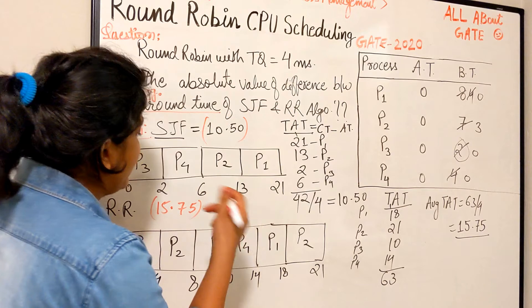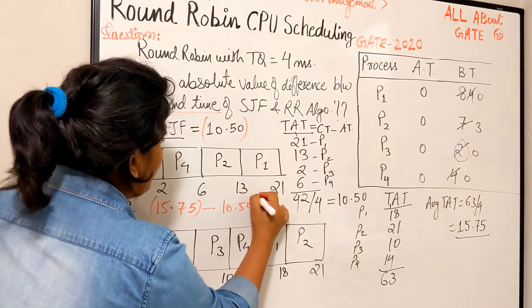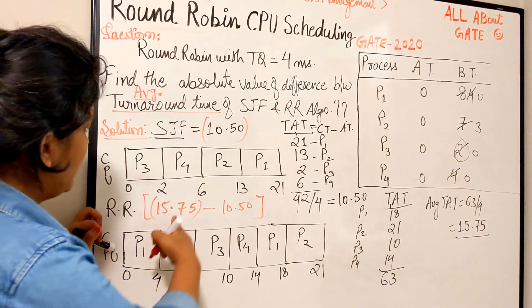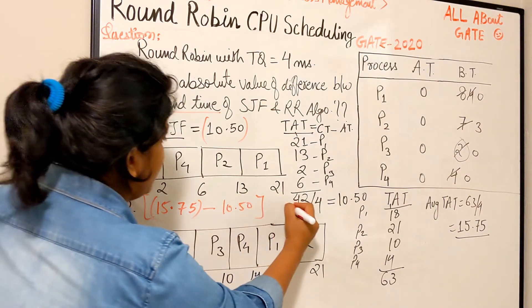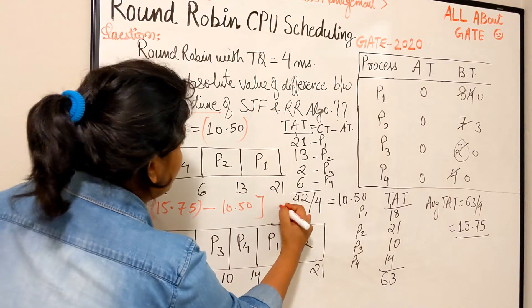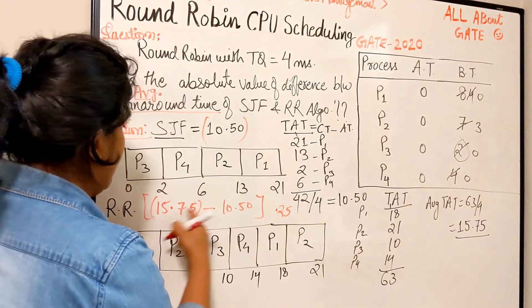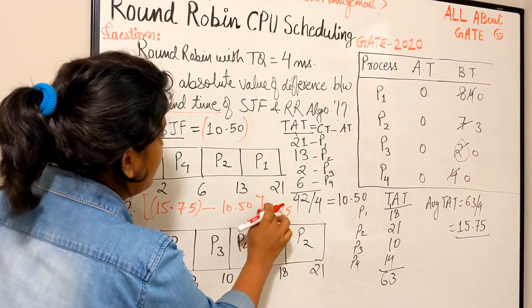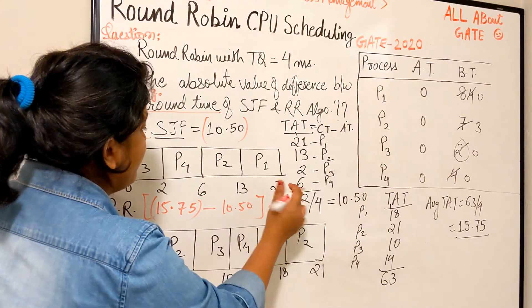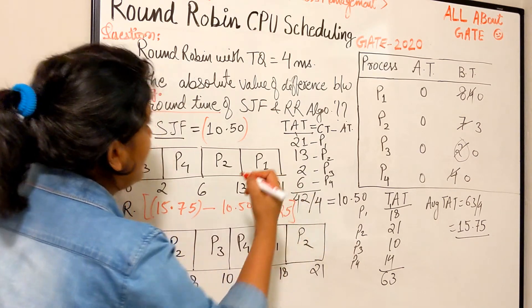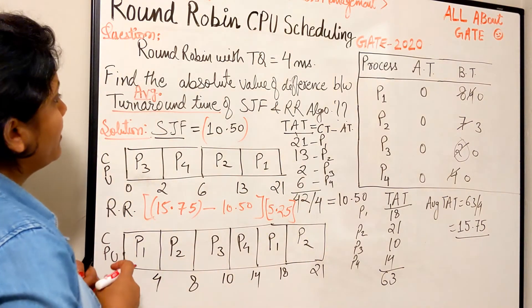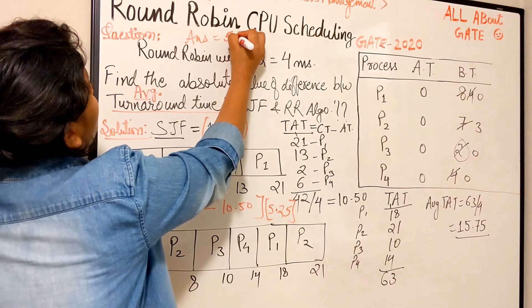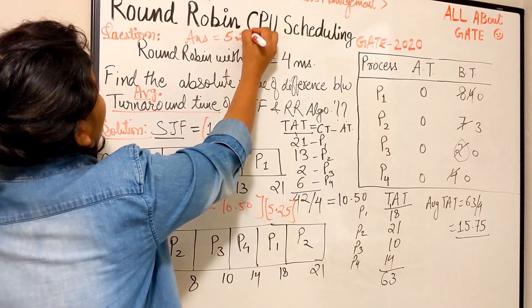Let me write this down. Round Robin is 15.75, SJF is 10.50. We need to find the difference. The value is 5.25. The answer is 5.25.